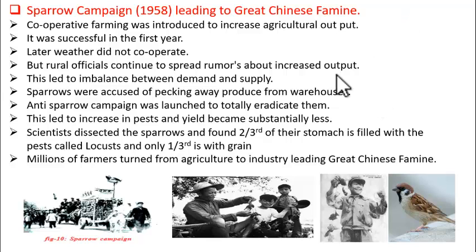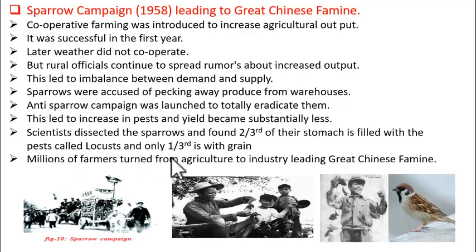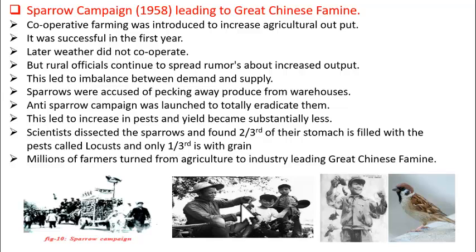By then it was already too late. Millions of people suffered hunger and crores of people died. Many millions left agriculture, moved to industry, and left China. It was also told that many people had eaten mud and died due to choking of the digestive system. Even some people had eaten fellow human beings out of hunger. So severe the Great Chinese Famine was.